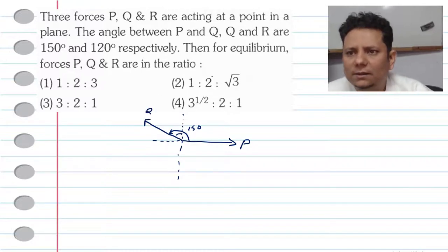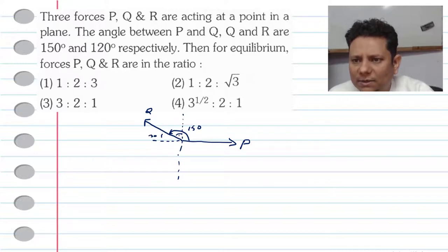After that, if this is 150, then this angle is 30. And this angle is 60. That means this angle is 120 degree. So 30 plus 90. That means this angle is R force in this direction. So this angle is 120 degree.